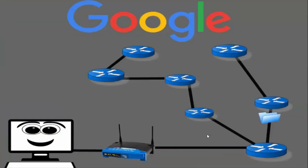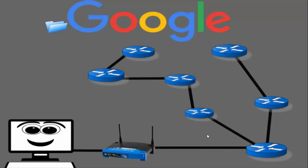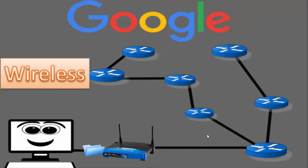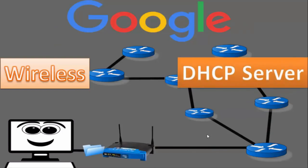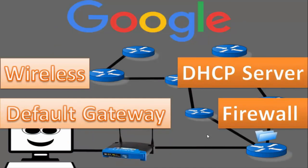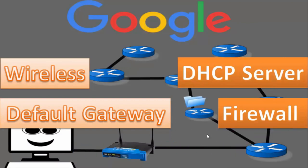The internet is entirely connected by routers. Routers are also gateway devices and have a variety of functions: they have a built-in wireless access point, they can act as a DHCP server, they serve as the default gateway, they have a built-in firewall, and they support additional complex functions like MAC address filtering and much more.